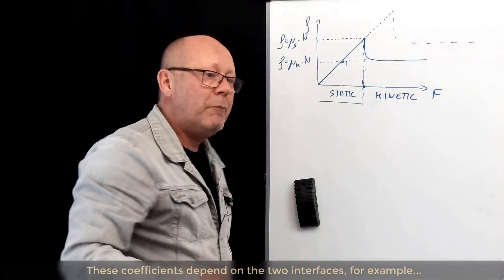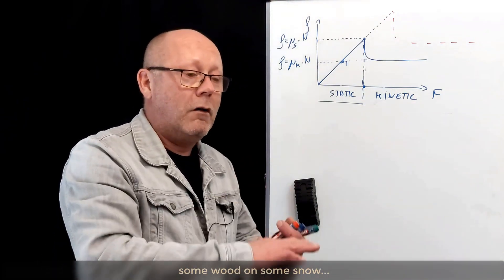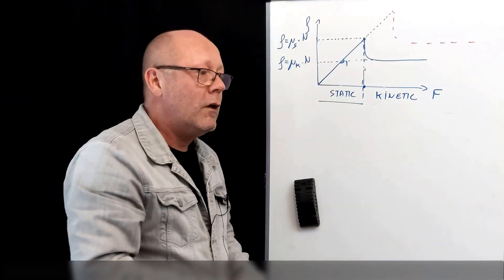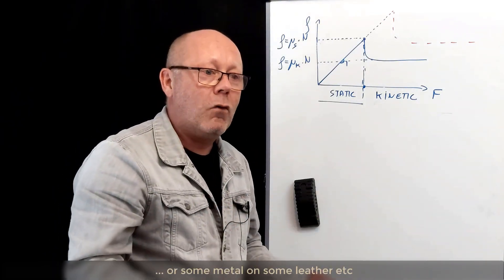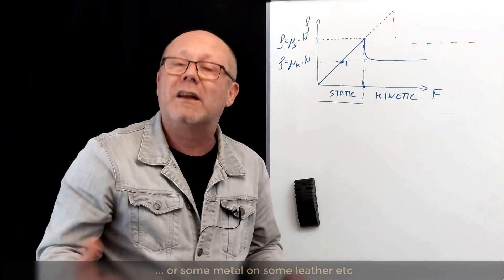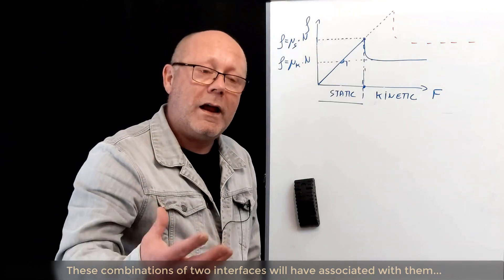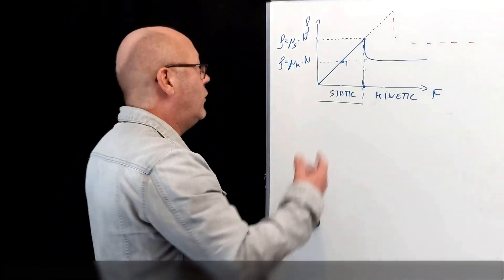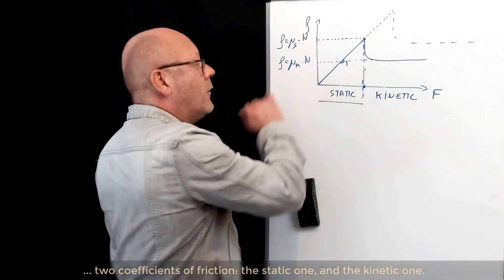These coefficients depend on the two interfaces. For example, if you have some wood on some snow, or some wood on the carpet, or some metal on some leather, whatever. This combination of two interfaces will have associated with them two coefficients of friction, the static one and the kinetic one.